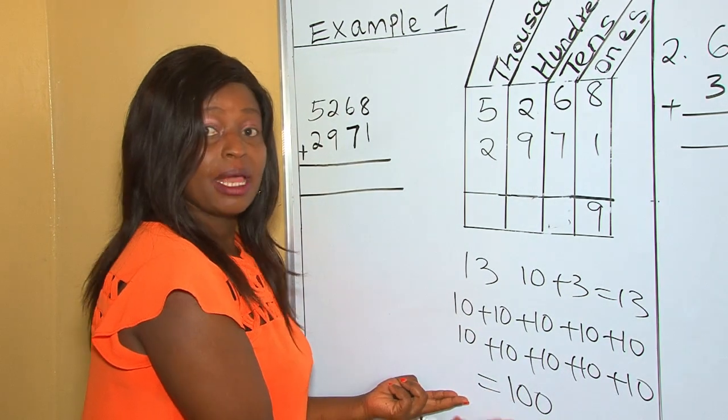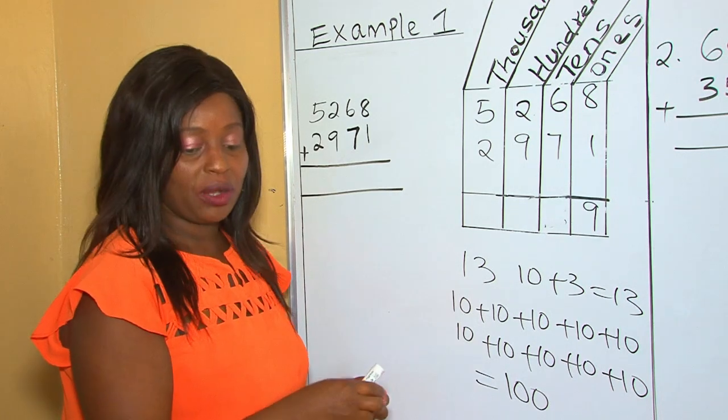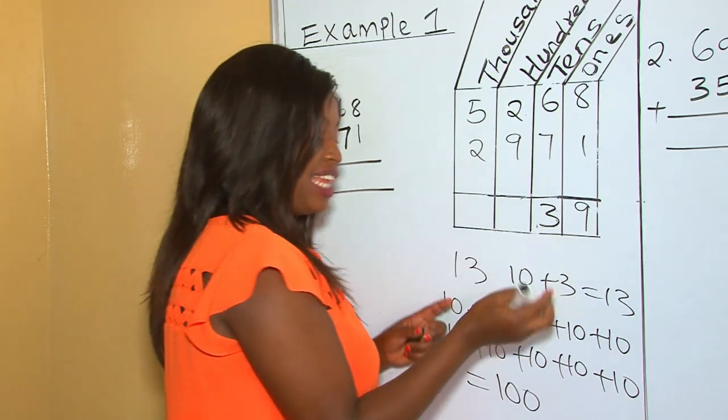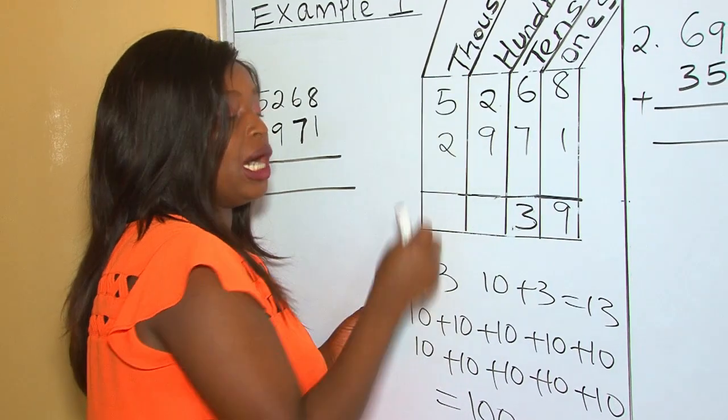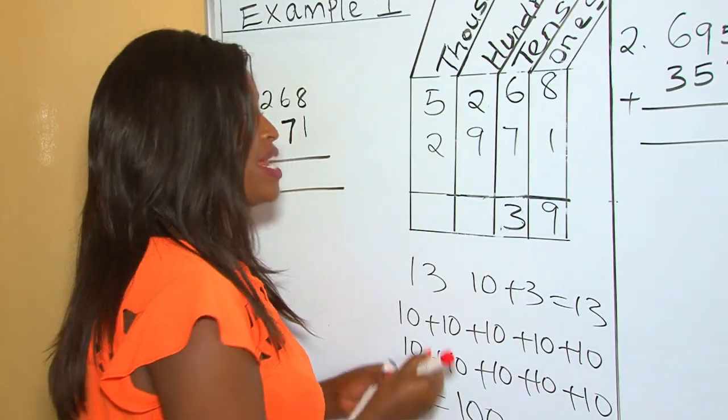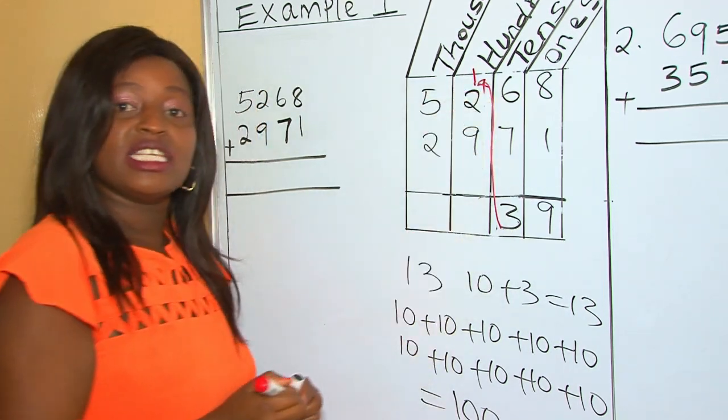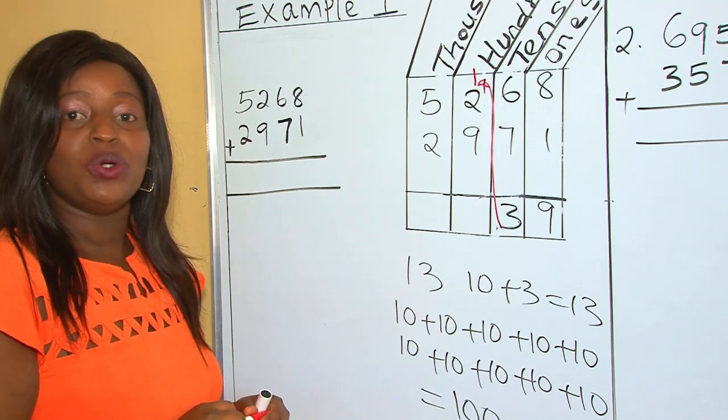our 10 tens makes 100. So when we're going to record our answer, we record that 3 and that 10, we take it now to the 100 side as 100. By this, we have regrouped 10 to 100.